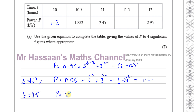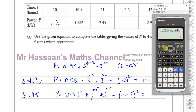Now when t equals 11.5, P equals 0.95 plus 2 to the power of 11.5 minus 12, which is minus 0.5, plus 2 to the power of 12 minus 11.5, which is 0.5, minus 11.5 minus 12 squared, which is minus 0.5 squared. So I change the 10 in my calculator to 11.5 for all the relevant positions.